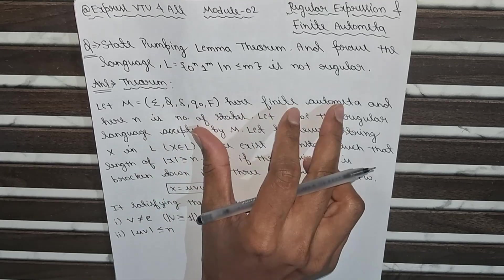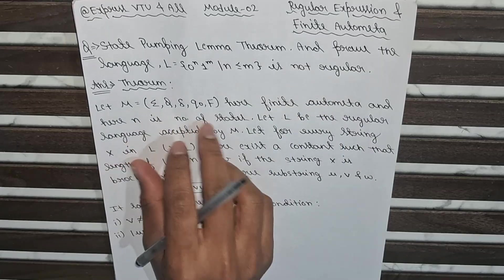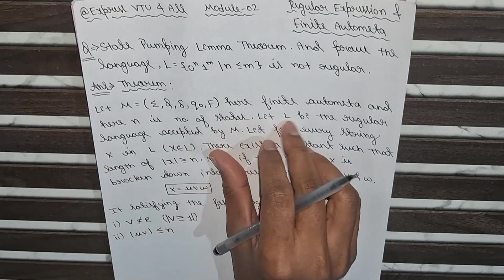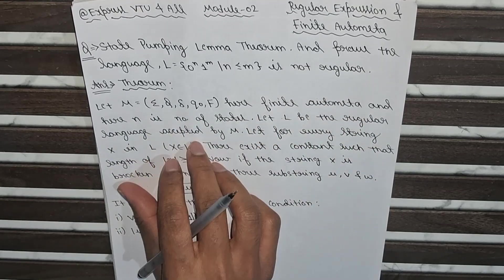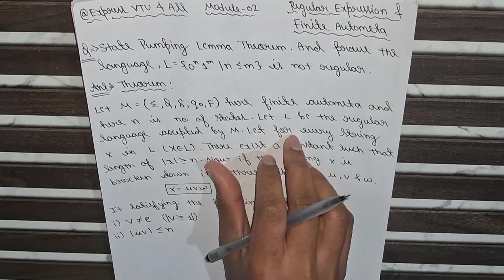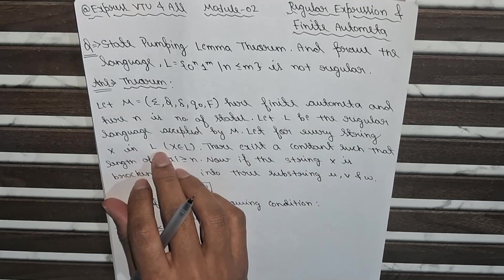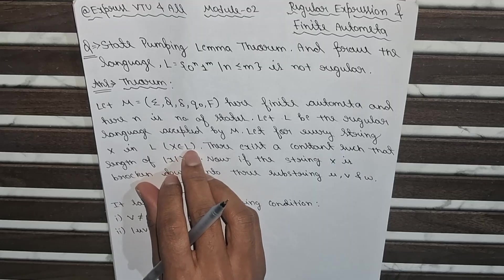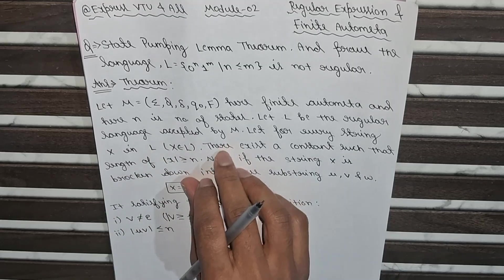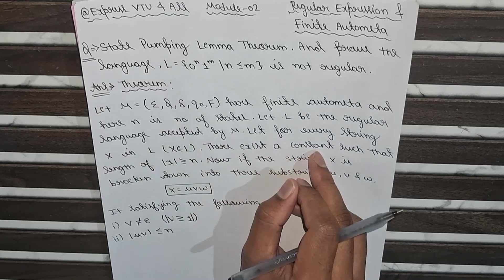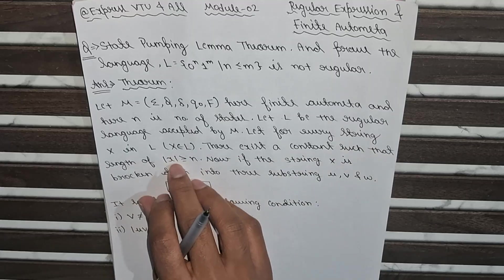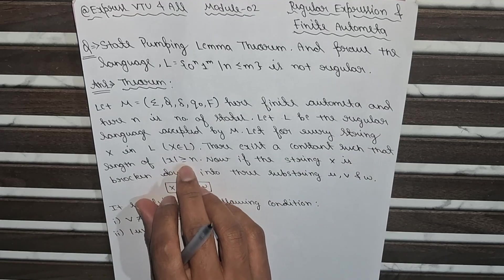Here M is the finite automata and here m is number of states. So let L be the regular language accepted by M. Let for every string x in L, which means that x is a substring of L which belongs to L. So there exists a constant such that length of x should be greater than or equal to n.